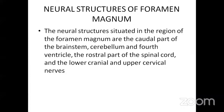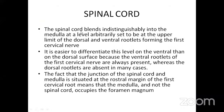The neural structures in the region of the foramen magnum include the caudal brainstem, cerebellum, fourth ventricle, rostral spinal cord, and lower cranial and upper cervical nerves. The spinal cord blends indistinguishably into the medulla at the upper limit of the dorsal and ventral rootlets forming the first cervical nerve. The ventral rootlets of C1 are always present, while dorsal rootlets are absent in many cases. The medulla — not the spinal cord — actually occupies the foramen magnum.